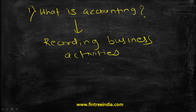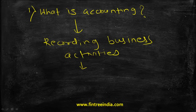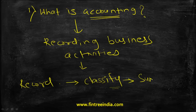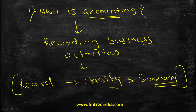Imagine a business of the size of Walmart, which would be undertaking millions and millions of activities probably every day. Only recording these activities is not going to be sufficient for decision making. These activities need to be classified, and then finally all these activities need to be summarized as well. So what accounting really means is: number one, recording business activities; number two, classifying these activities; and finally, preparing a summary. That is how the accounting process concludes.